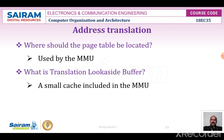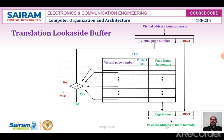The page table entry for a page includes the address of the page frame where the page resides in main memory, along with some control bits. In addition, the TLB must hold the virtual page number for each page, so that the correct entry can be located.